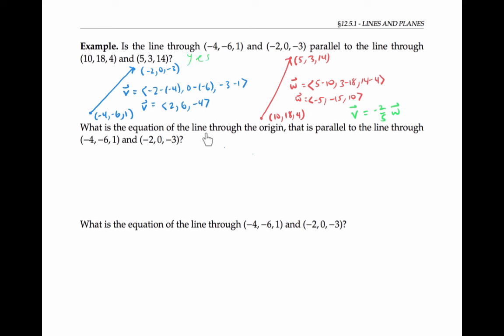Now suppose I want the equation of a line through the origin that's parallel to the line through these two points — so that's a line in space that heads off in the direction of V. If I place V with its tail end at the origin, then the point at the tip of V, so that's the point 2, 6, negative 4, will be on my line. So will the point halfway along V, that would be the point 1, 3, negative 2, and the point at the tip of 2V, that would be the point 4, 12, negative 8, will also be on my line.